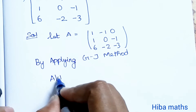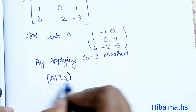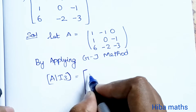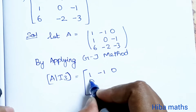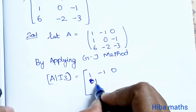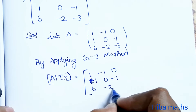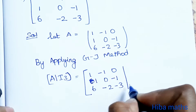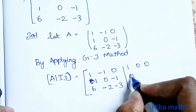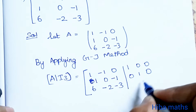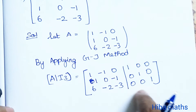We write the augmented matrix [A | I3] as: [1, -1, 0 | 1, 0, 0; 1, 0, -1 | 0, 1, 0; 6, -2, -3 | 0, 0, 1]. The first row's leading entry is already 1, so we proceed.